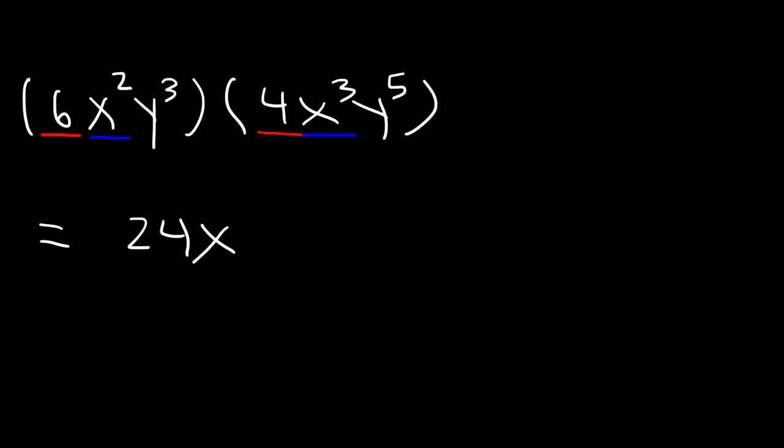Now here's another example. Multiply 6x squared y cubed by 4x cubed y to the 5th. So let's begin by multiplying 6 times 4. 6 times 4 is 24. Next, let's multiply x squared by x cubed. 2 plus 3 is 5, so this is going to be x to the 5th power. And then y cubed by y to the 5th. 3 plus 5 is 8. And so that's it for that example.